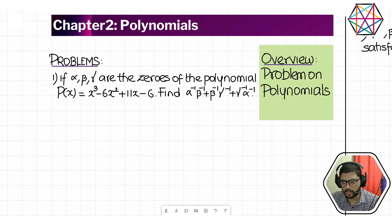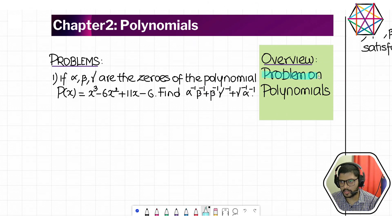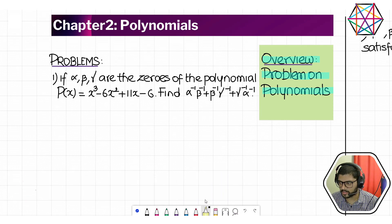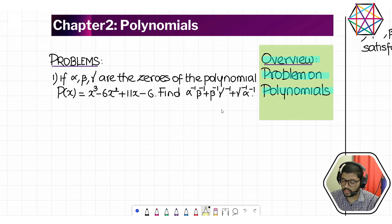In today's class we are discussing problems on polynomials — that is all. This is the overview of today's class. We are discussing a mixed set of problems, everything that we have discussed in this chapter on polynomials. We are done with the theory part fully, so whatever variety of problems we have covered so far, everything we are going to discuss in today's class.